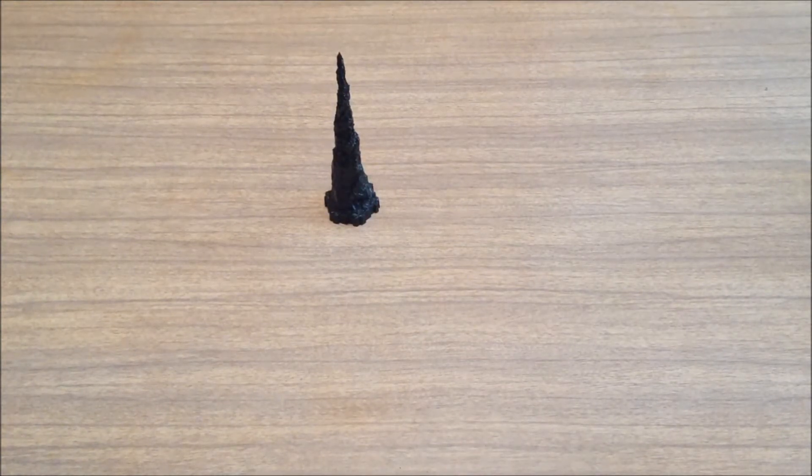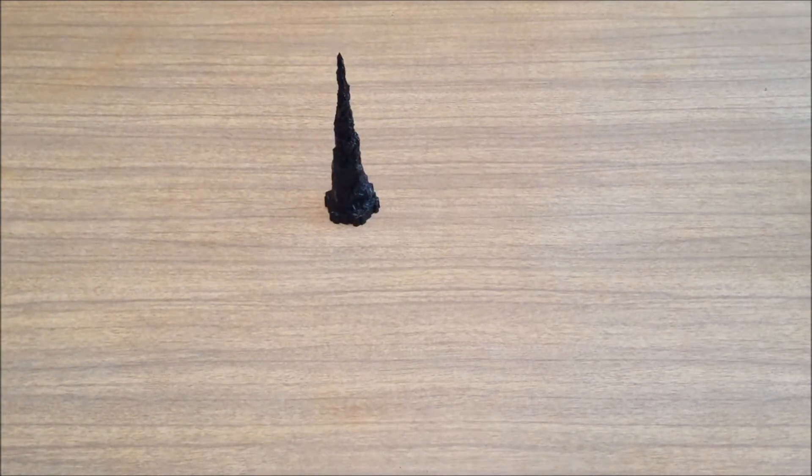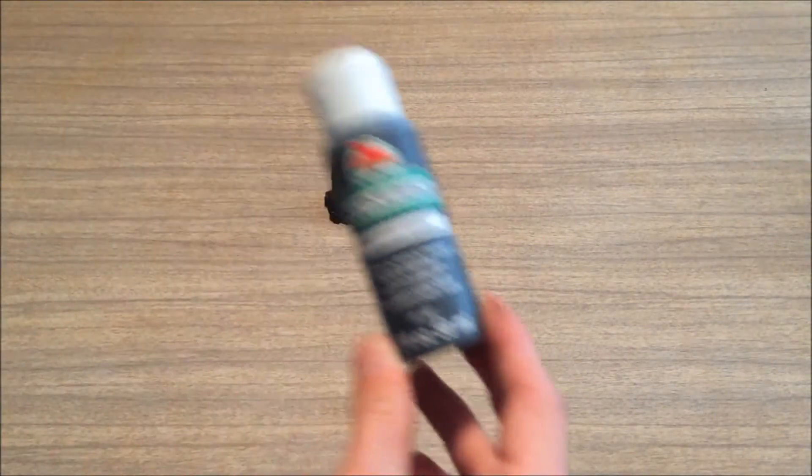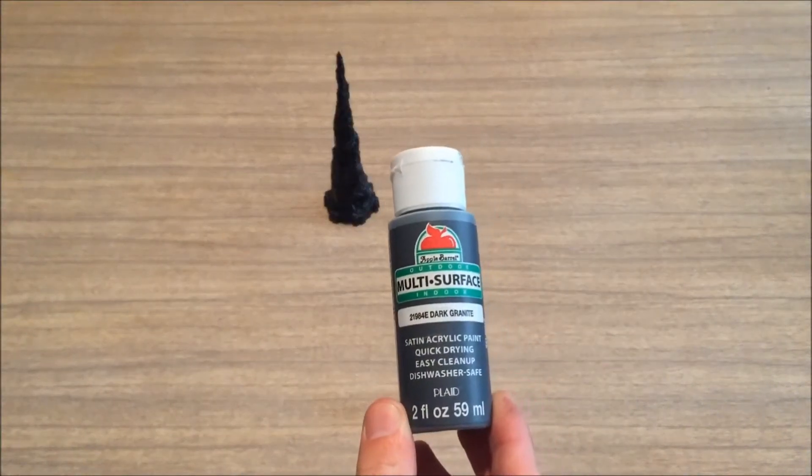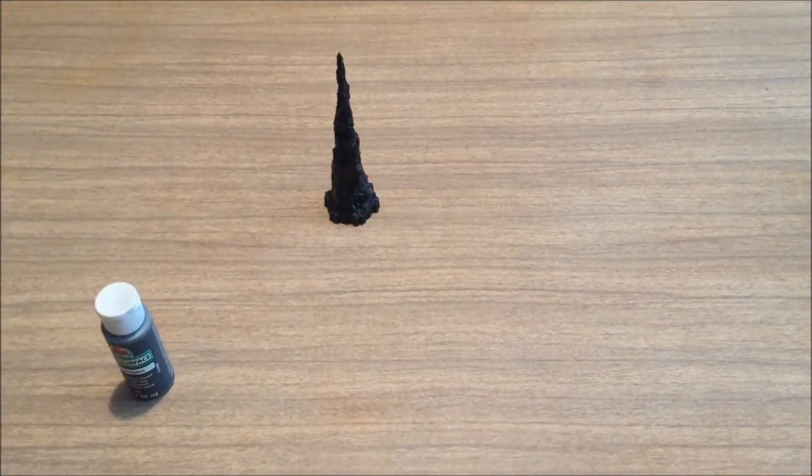I did a second layer of black just to make sure all my crevices were filled in. We're going to move to painting the stone colors. So I have the dark granite for our beginning gray.